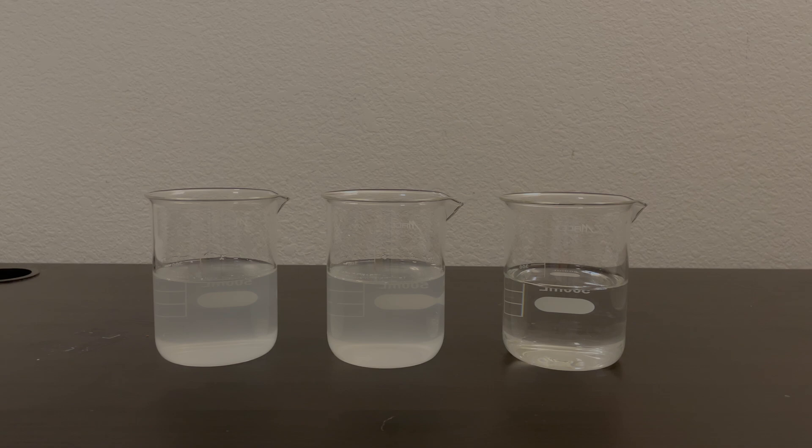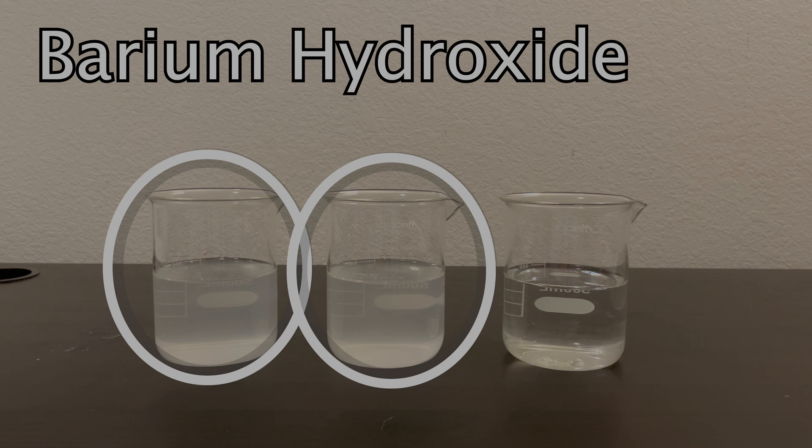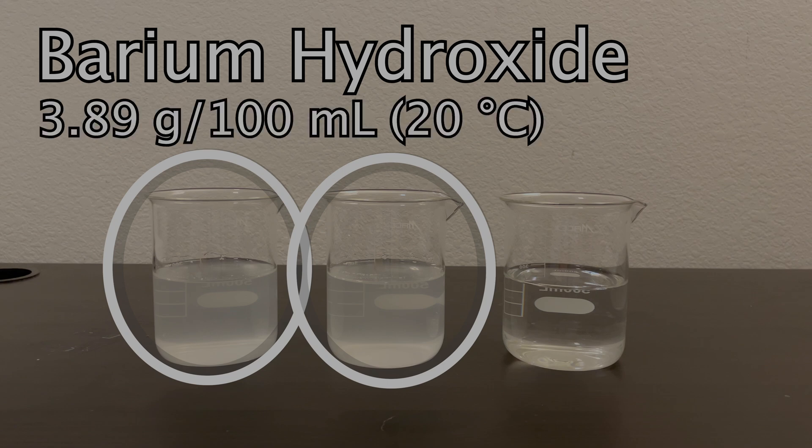As a side note, the reason that the solutions in these two beakers were so cloudy to begin with was that barium hydroxide doesn't dissolve very well in water. It is technically soluble, but only at a rate of a few grams per 100 milliliters. So, it does take quite a bit of patience to dissolve it.